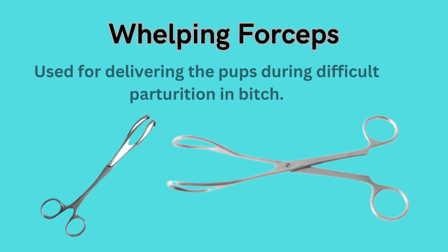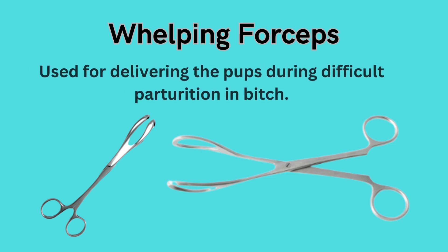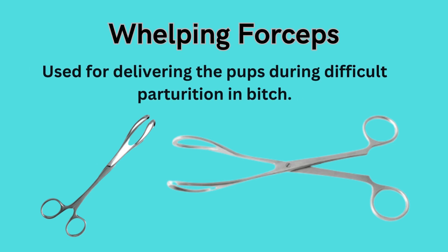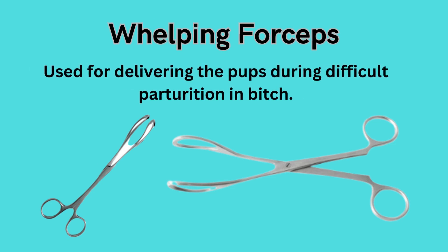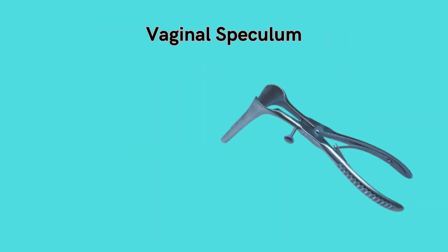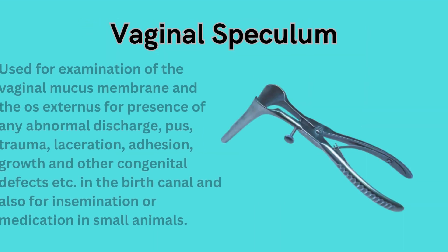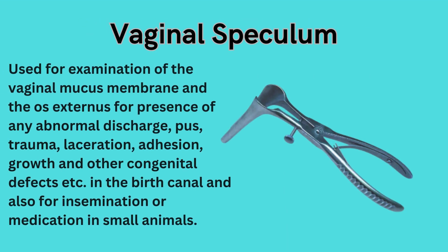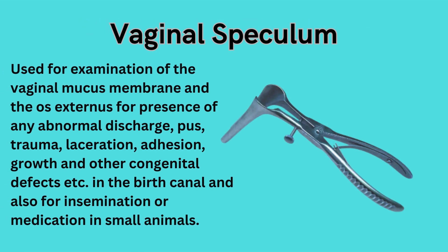Whelping forcep: used for delivering the pups during difficult parturition in the bitch. Vaginal speculum: used for examination of the vaginal mucous membrane and the OS externus for presence of any abnormal discharge,